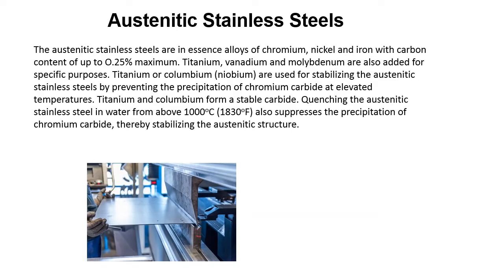The austenitic stainless steels are in essence alloys of chromium, nickel, and iron with carbon content up to 0.25% maximum. Titanium, vanadium, and molybdenum are also added for specific purposes. Titanium or columbium (niobium) are used for stabilizing austenitic stainless steels by preventing the precipitation of chromium carbide at elevated temperatures — titanium and columbium form a stable carbide. Quenching the austenitic stainless steel in water from above 1000°C (1830°F) also suppresses the precipitation of chromium carbide, thereby stabilizing the austenitic structure.